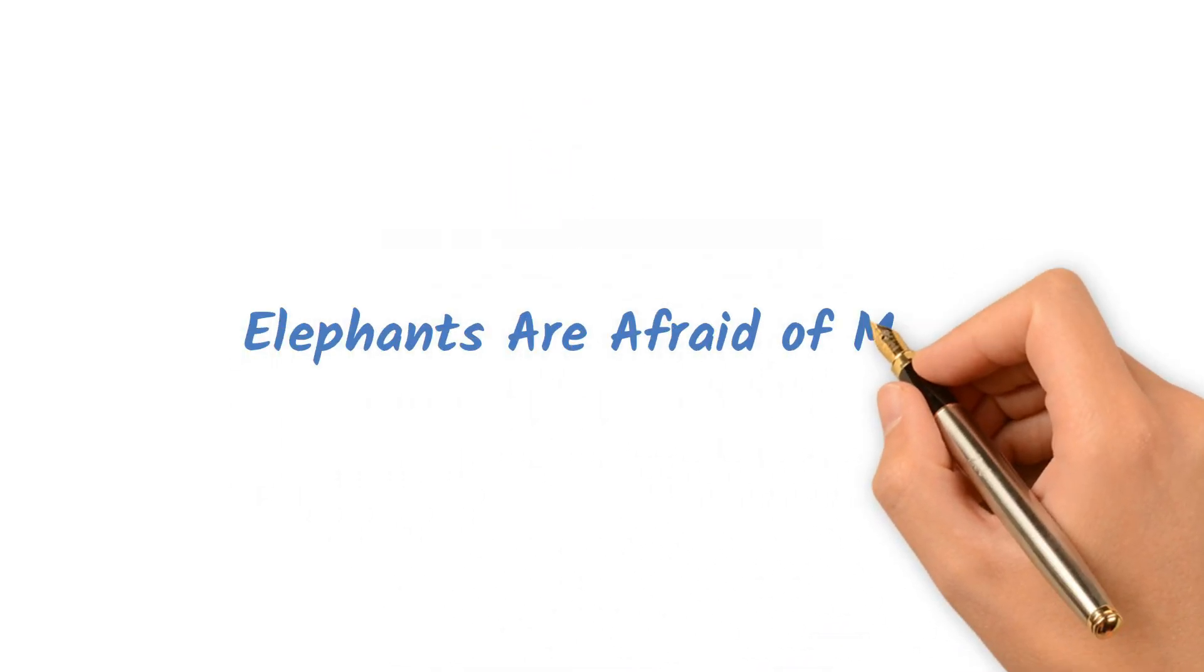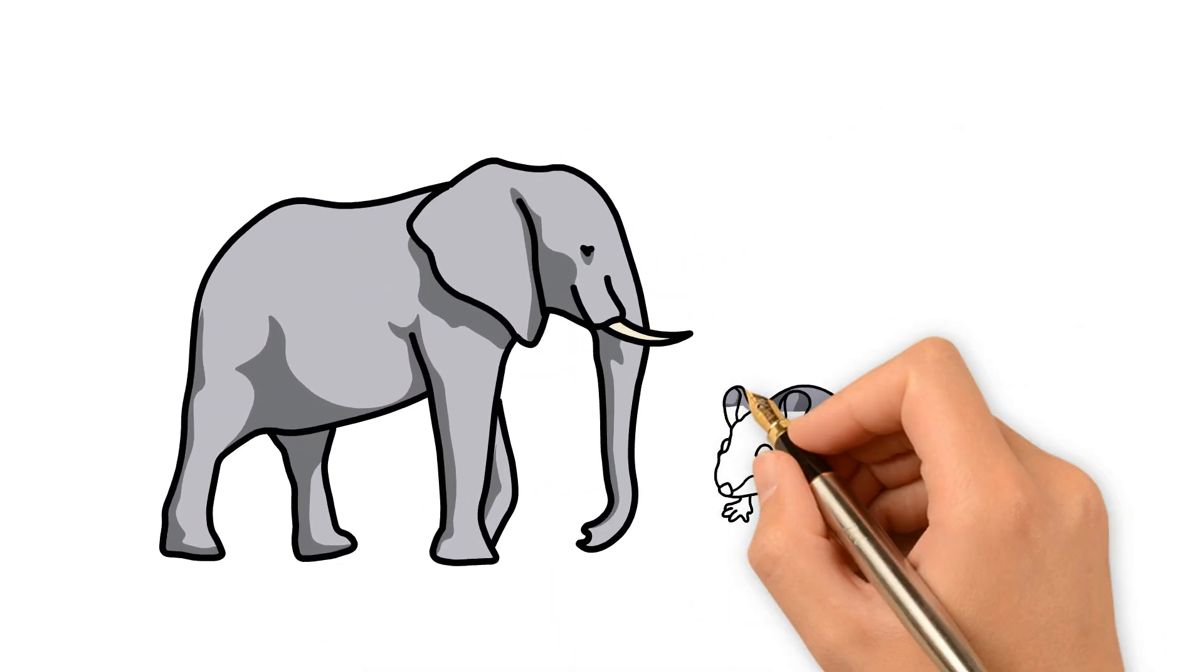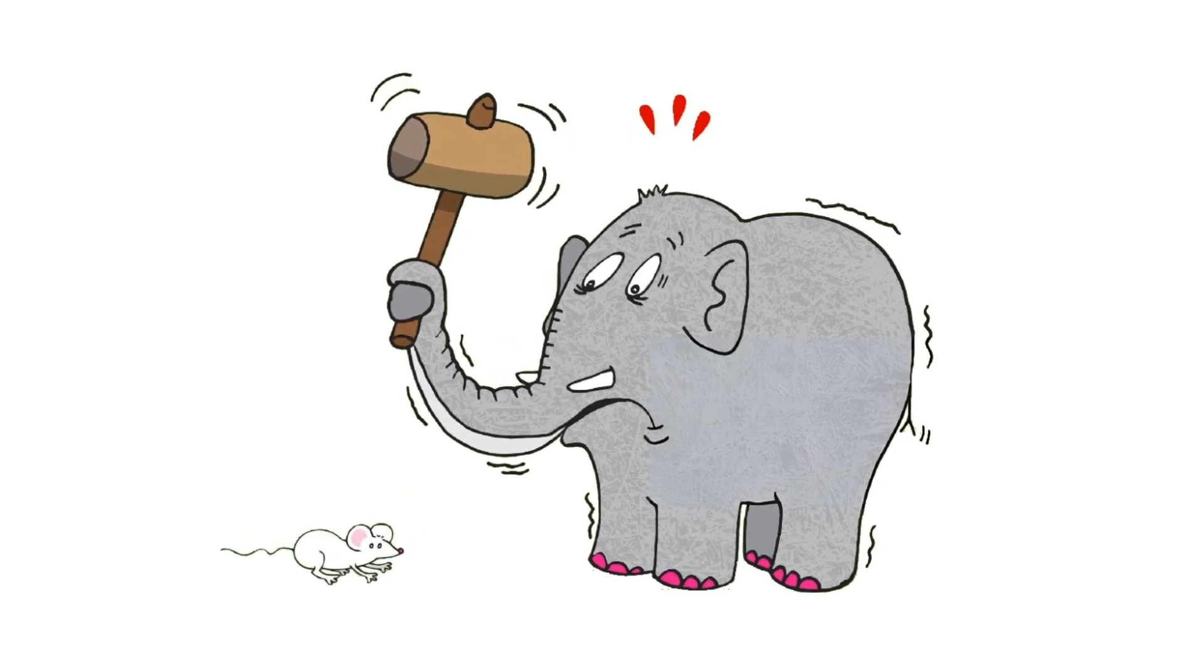Elephants are afraid of mice. They might startle at a sudden movement, but elephants aren't inherently scared of mice. Their size and intelligence make them unlikely to be afraid of small creatures.